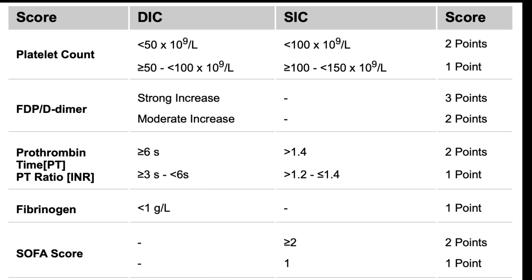The scoring system was developed by the DIC Scientific Standardization Committee of the International Society on Thrombosis and Hemostasis, ISTH, using data from over 1,400 septic patients treated with recombinant thrombomodulin. Through univariate and multivariate analyses, three independent predictors of 28-day mortality were identified: platelet count, prothrombin time (PT), and the SOFA score. Platelet count earns 1 point if between 100–150 ×10⁹/L, and 2 points if less than 100 ×10⁹/L. PT-INR gets 1 point if between 1.2–1.4, and 2 points if greater than 1.4. The SOFA score contributes 1 point if it's 1, and 2 points if 2 or greater. SIC is diagnosed when the total score reaches 4 or more.